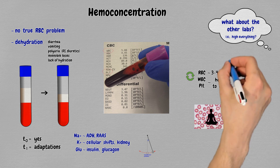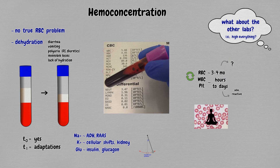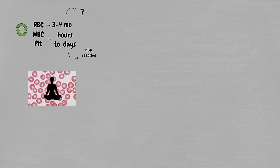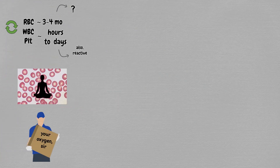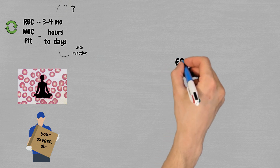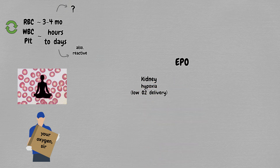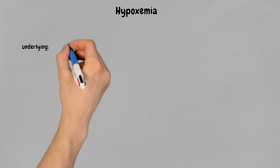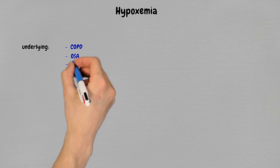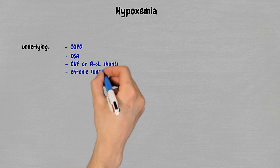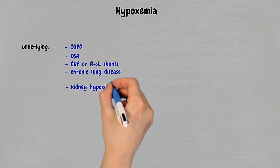What regulates the red blood cell count and hemoglobin? The function of red cells is to deliver oxygen, so naturally that's the main thing controlling production. It's mediated through EPO, produced in the kidneys. If the kidneys experience hypoxia — low oxygen delivery — they secrete EPO, which tells the bone marrow to make more red cells. Secondary to hypoxemia is our second cause of erythrocytosis. The most common underlying cause is COPD, but it can be found in anything causing hypoxemia, such as nocturnal hypoxemia from OSA, chronic heart or lung disease, and even kidney-specific hypoxia in renal artery stenosis.